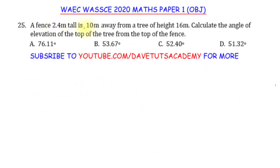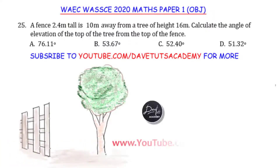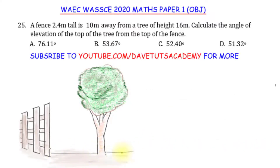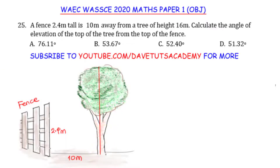A fence 2.4 meters tall is 10 meters away from a tree of height 16 meters. We have to calculate the angle of elevation of the top of the tree from the top of the fence. Let's draw a diagram: the horizontal ground, the fence at 2.4 meters tall, the distance between fence and tree is 10 meters, and the tree is 16 meters tall.